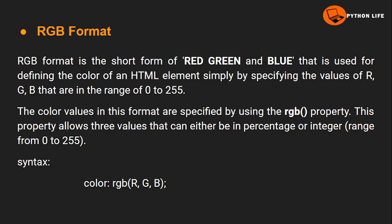Next is RGB format. RGB is the short form of red, green, and blue. It is used for defining the color of an HTML element simply by specifying the values of RGB that are in the ranges of 0 to 255. In the RGB format, the ranges for red, green, and blue are 0 to 255.